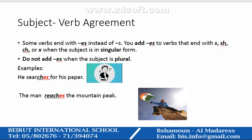Let's check out this new rule. Some verbs end with "-es" instead of "-s". You add "-es" to verbs that end with "-s", "-sh", "-ch", or "-x" when the subject is in singular form. You do not add "-es" when the subject is plural.